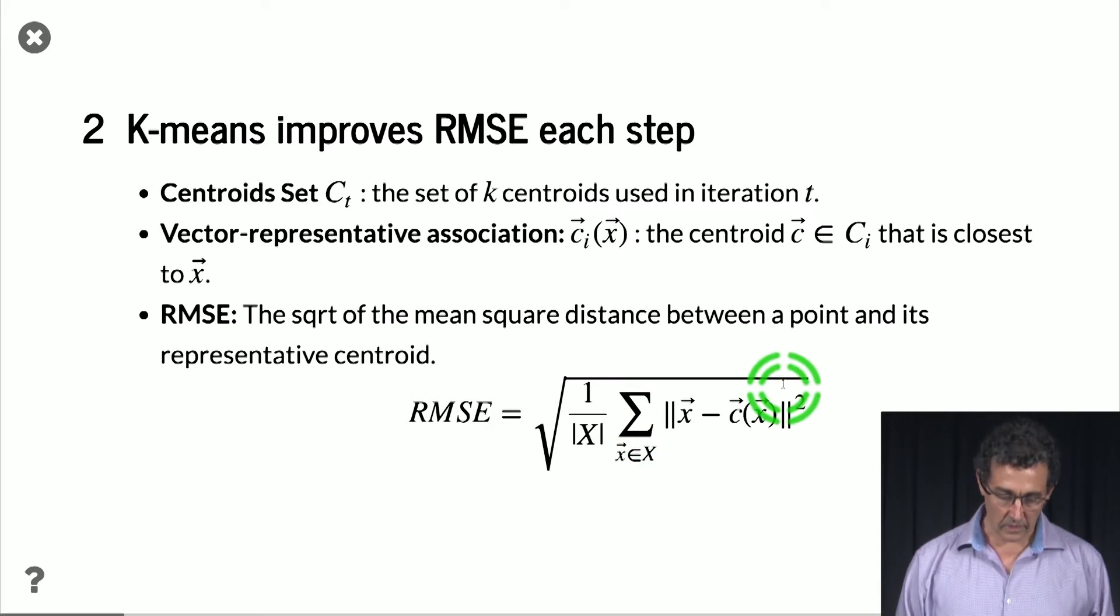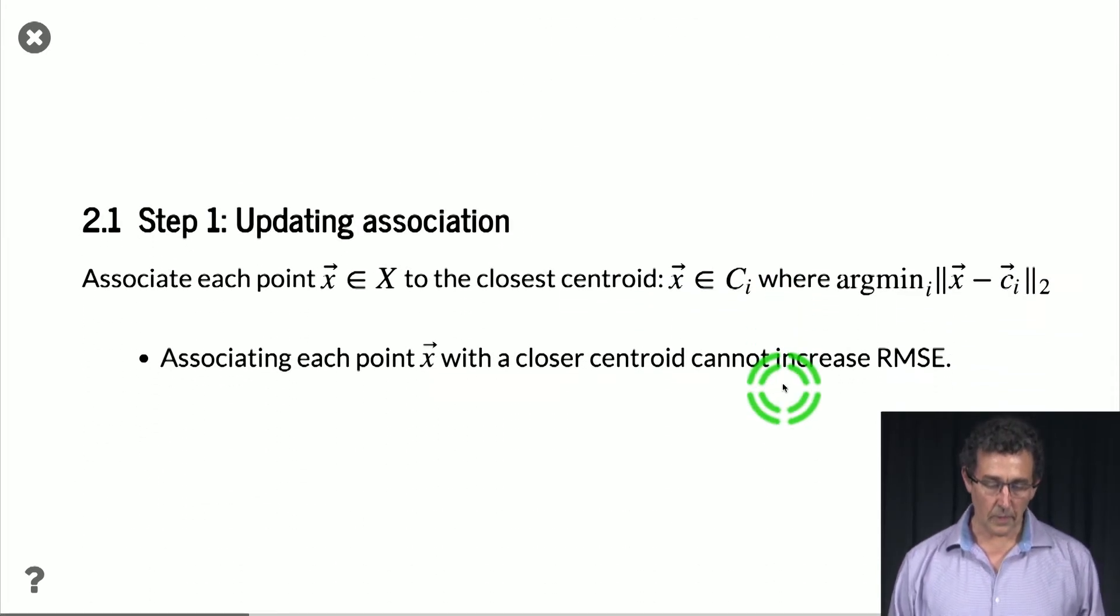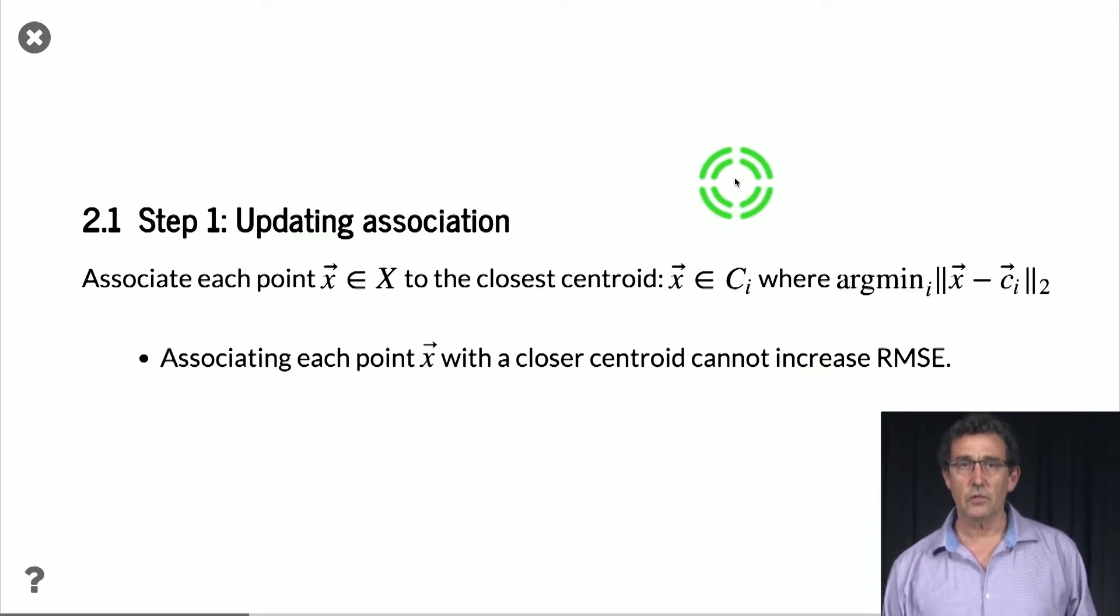So why is this useful? Because what we can show is that at every step of the k-means algorithm, the RMSE cannot increase. It can either decrease or stay the same.